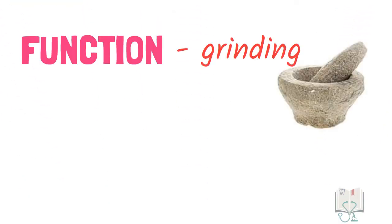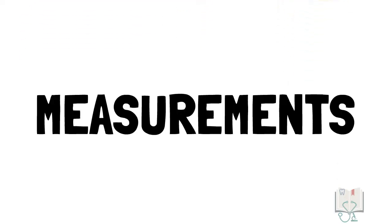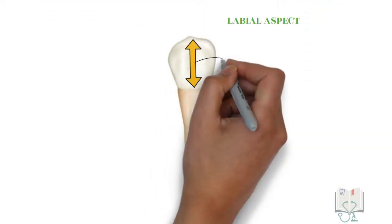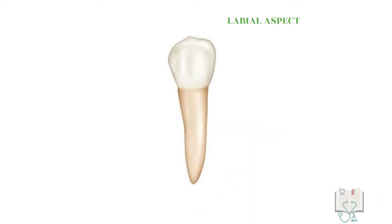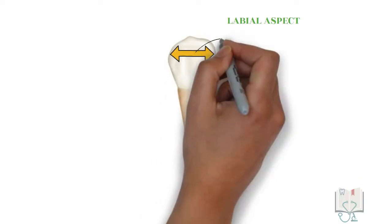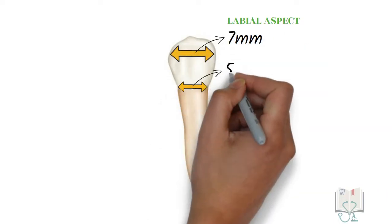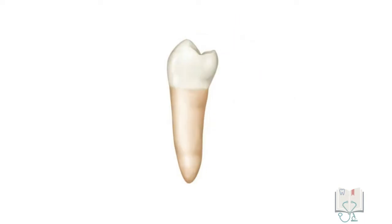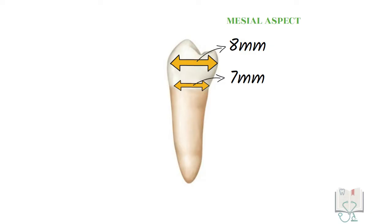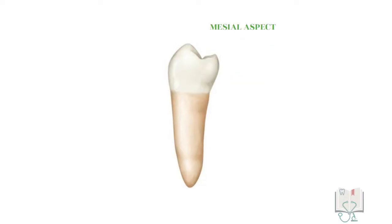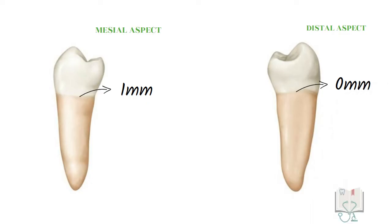The function of the mandibular second premolar is grinding. Coming to measurements, the crown length is 8 mm and root length is 14.5 mm. The mesiodistal diameter is 7 mm and its cervix is 5 mm. The buccolingual diameter is 8 mm and its cervix is 7 mm. The curvature of the cervical line at the mesial side is 1 mm and on the distal side it is flat.